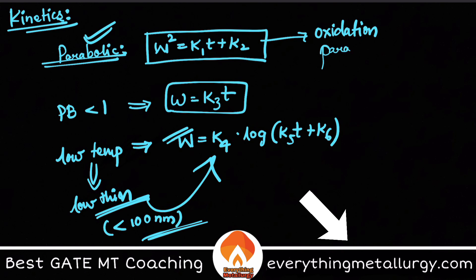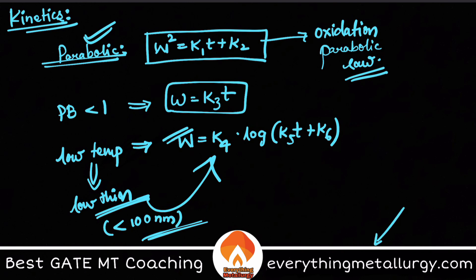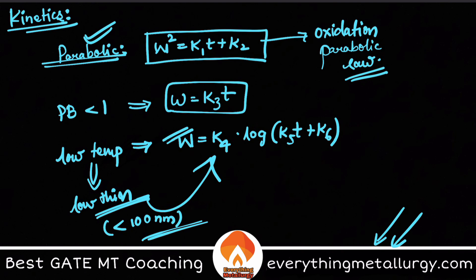I hope you understood the concept of oxidation, where we use the PB ratio and the different graphs for the reaction rate relationships. If you like this video, please hit the like button and share it with GATE metallurgy aspirants. Subscribe and turn on the notification bell. For an affordable test series and video course, check out everythingmetallurgy.com.